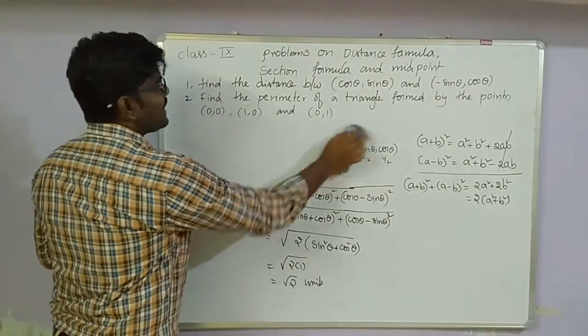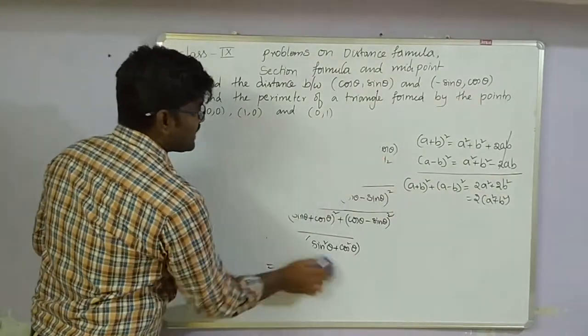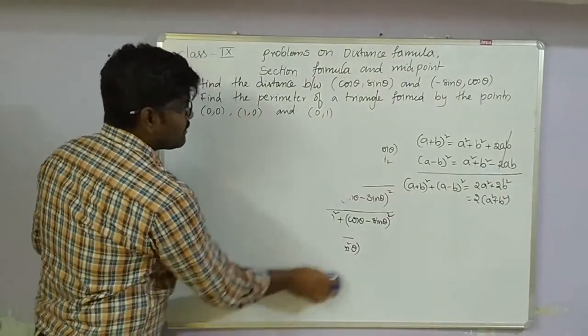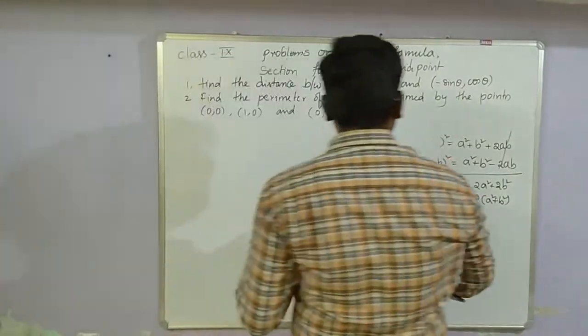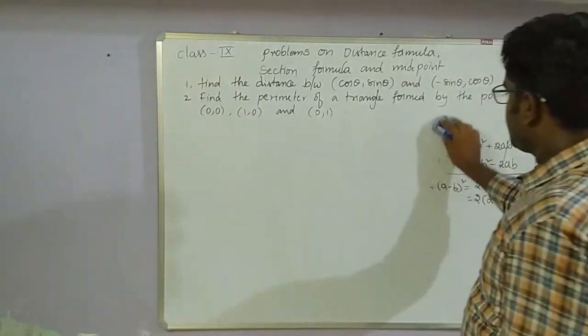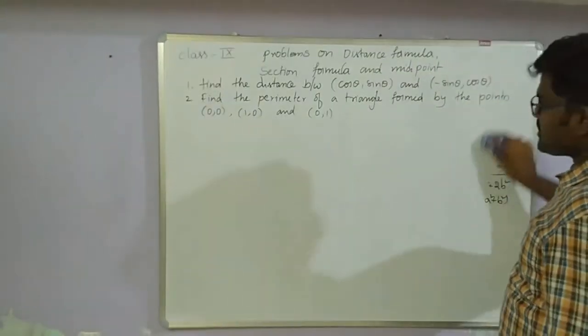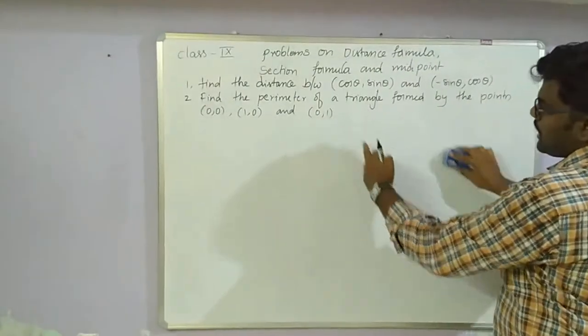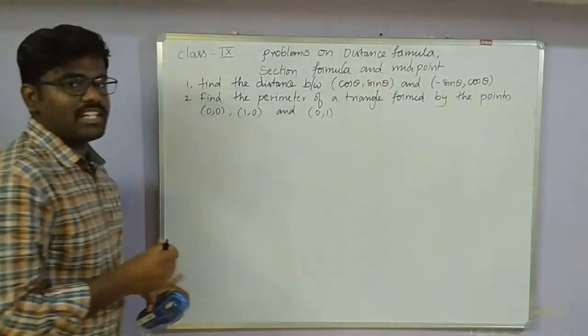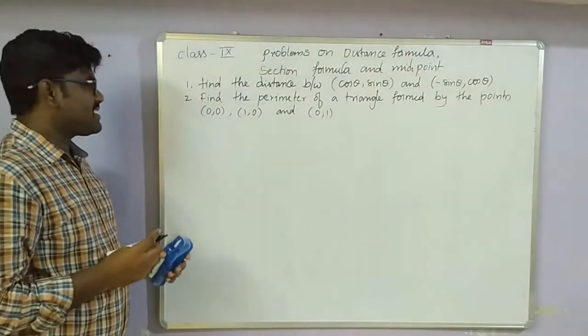Second question: find the perimeter of a triangle formed by the points (0,0), (1,0), and (0,1). Three points are given.